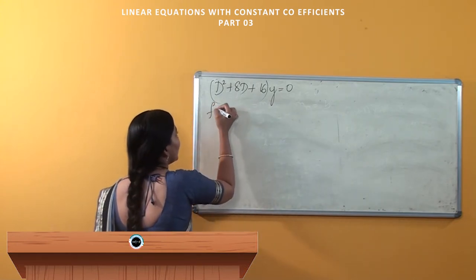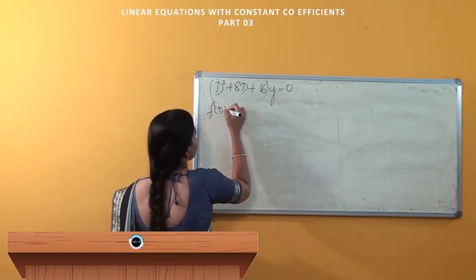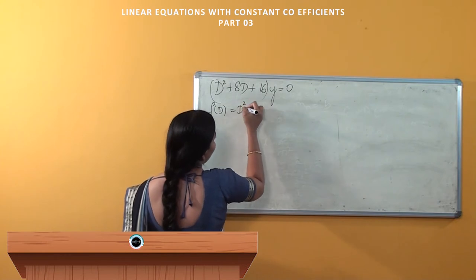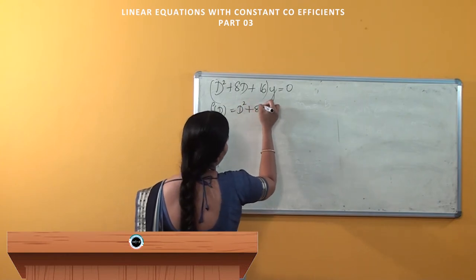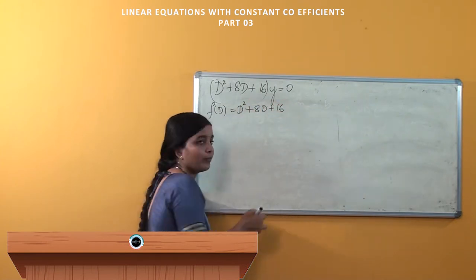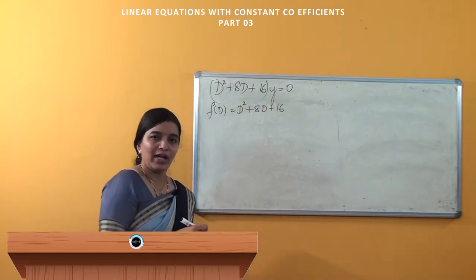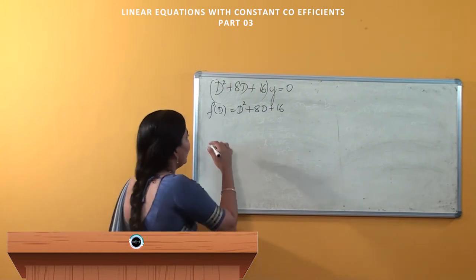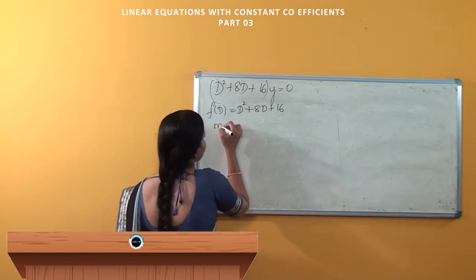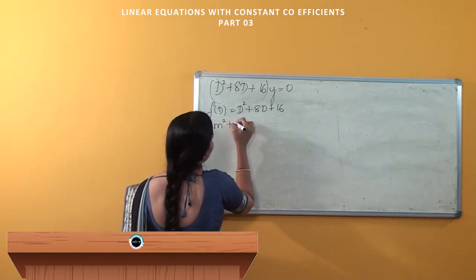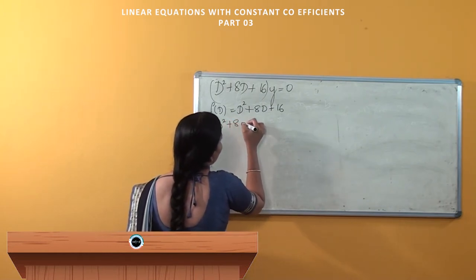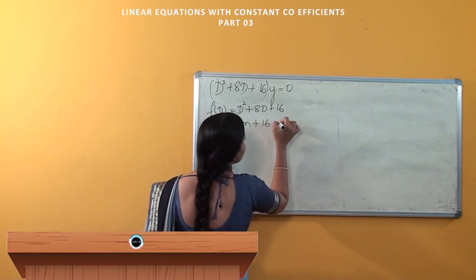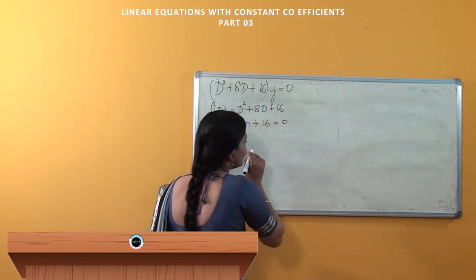Here, f(d) is nothing but d² + 8d + 16. So when we write it in the auxiliary equation, we get m² + 8m + 16 = 0.